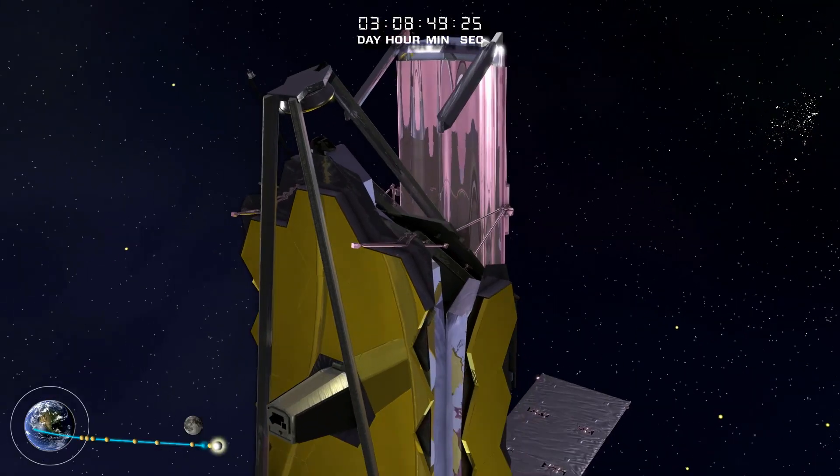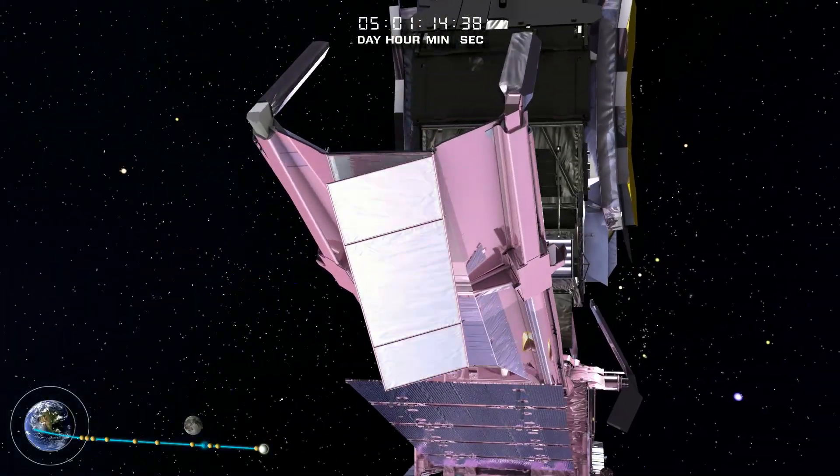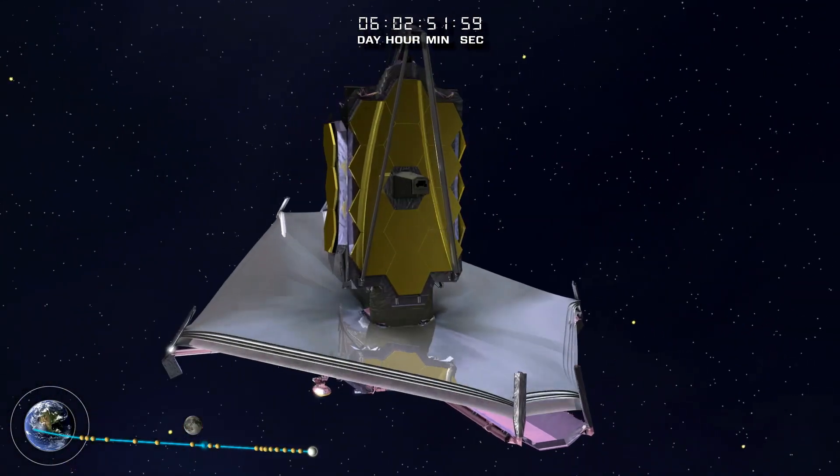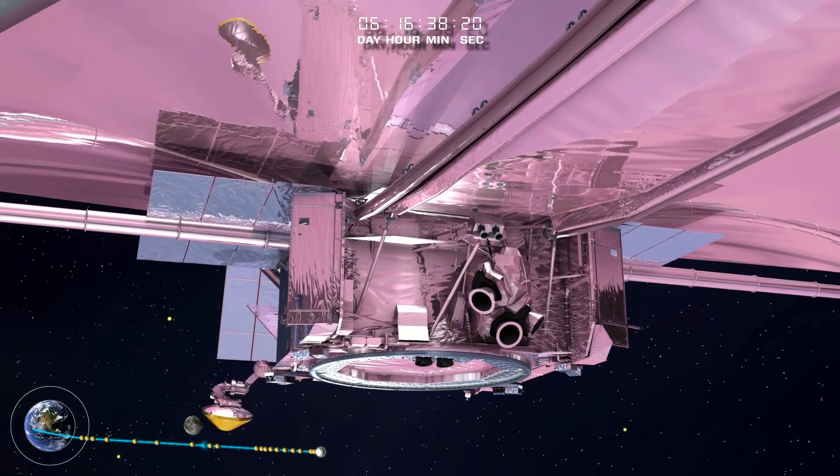Sunshield pallets will be lowered on day 3. On the 5th day, the stabilization flap will be deployed to act as a rudder, preventing the telescope from being pushed off course by the sun. Horizontal sunshield poles will extend on day 6, and the sunshield takes on its unique kite-like appearance.